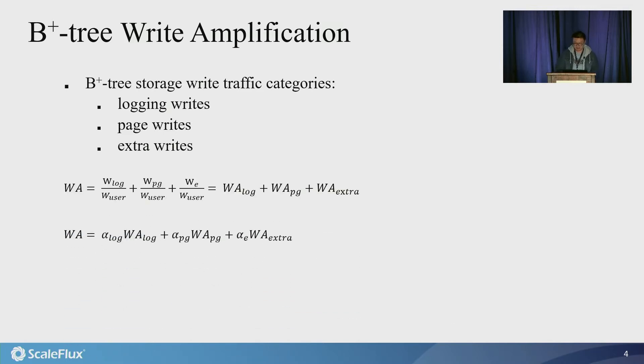So we can express the B+ tree write amplification with and without using built-in transparent compression storage hardware as in equations. W is the write traffic, and WA denotes the write amplification. W_user here denotes the total amount of user data written into the B+ tree, and alpha denotes the average compression ratio.